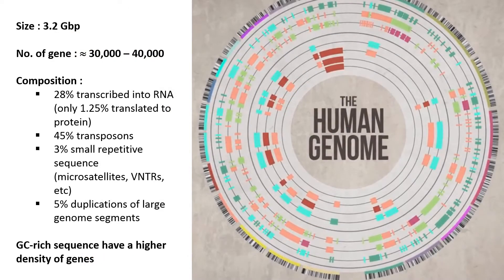The total estimated size of the human genome is 3.2 gigabases. Most DNA in the human genome is non-coding, including intergenic regions, introns, repetitive sequences, and so forth. About 28 percent of human DNA is transcribed into RNA, and only a mere 1.25 percent actually codes for proteins. On average, introns are longer in human DNA than in other organisms sequenced so far.